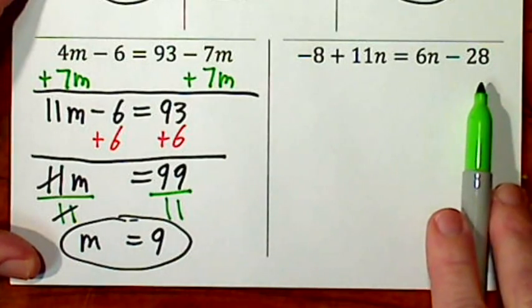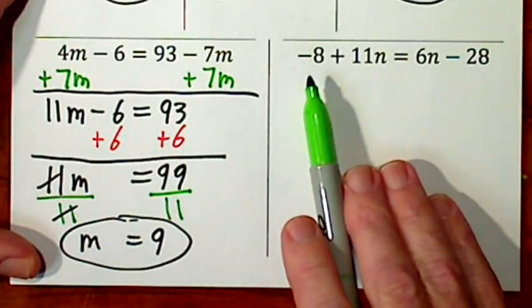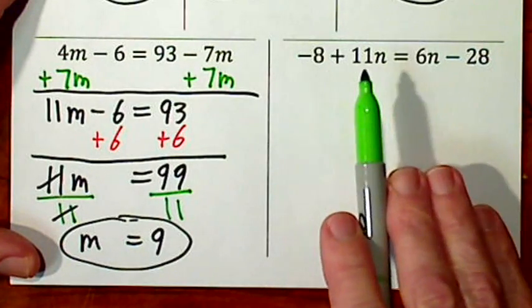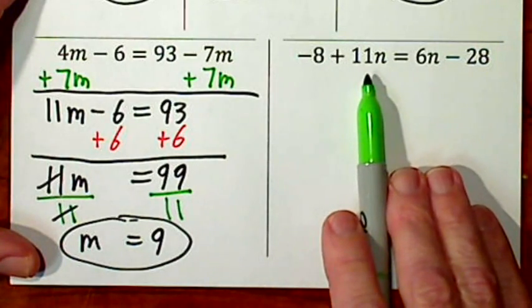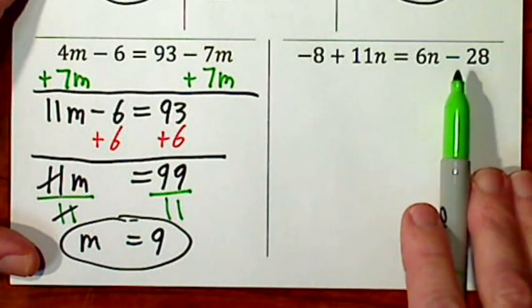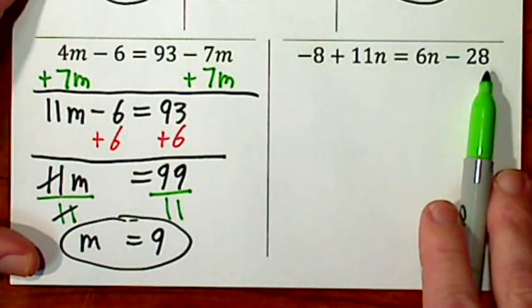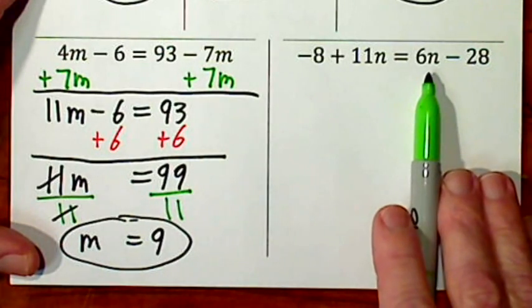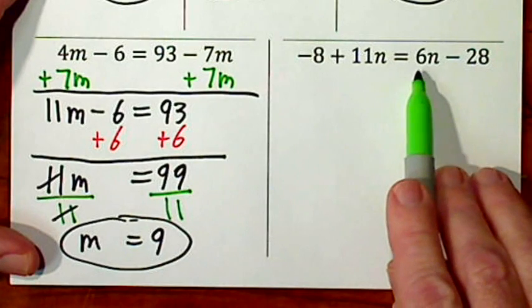Turning our attention to the last one, again, my first step, I could get rid of a negative 8, I could get rid of positive 11n. I could get rid of a 6n. Or I could get rid of a negative 28. My concern is the variables. I'll start with them.